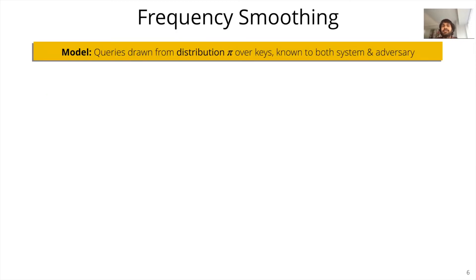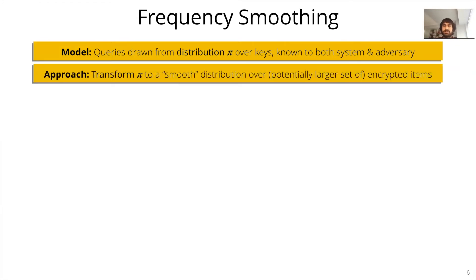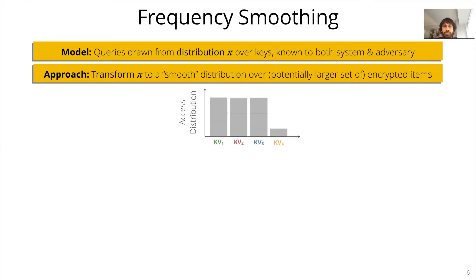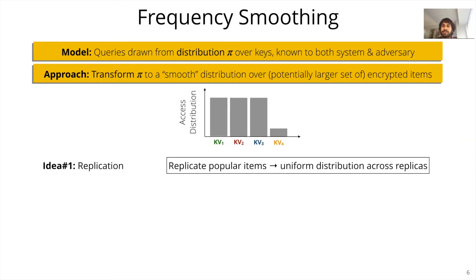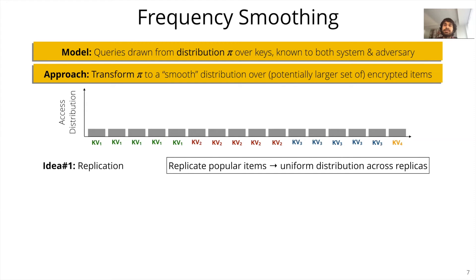Let's take a deeper look at how we can employ frequency smoothing to prevent access pattern attacks. At a high level, we model all queries as being drawn from a known distribution pi, and then try to smooth the access distribution across either the original set of encrypted key-value pairs or a larger superset. Assume you have four key-value pairs with the access distribution as shown in this figure. One way to smooth this distribution is to replicate popular key-value pairs and distribute accesses across the replicas so that each key-value pair is accessed equally. To any external observer, the access distribution would now appear uniform.